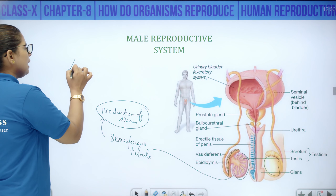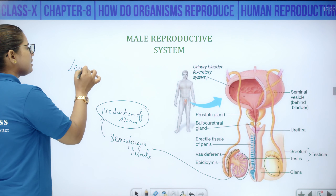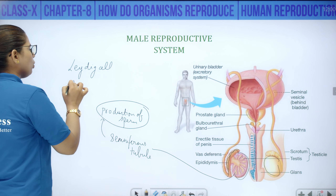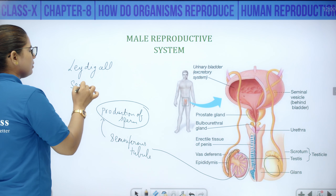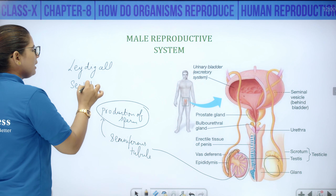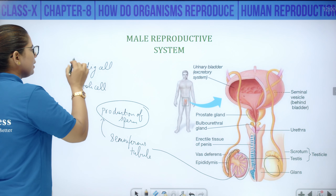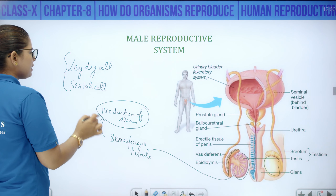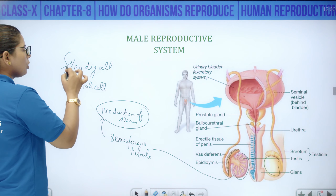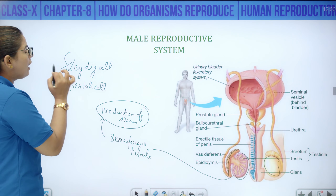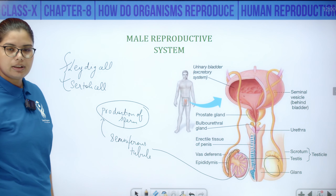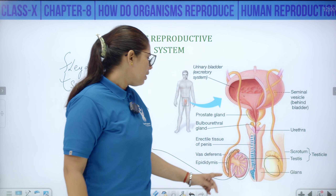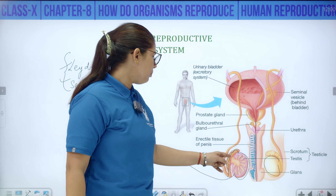In the testis, there are two types of cells present — Leydig cells and Sertoli cells. Their roles we will examine: in the testis, two types of cells are present — Leydig cells and Sertoli cells.